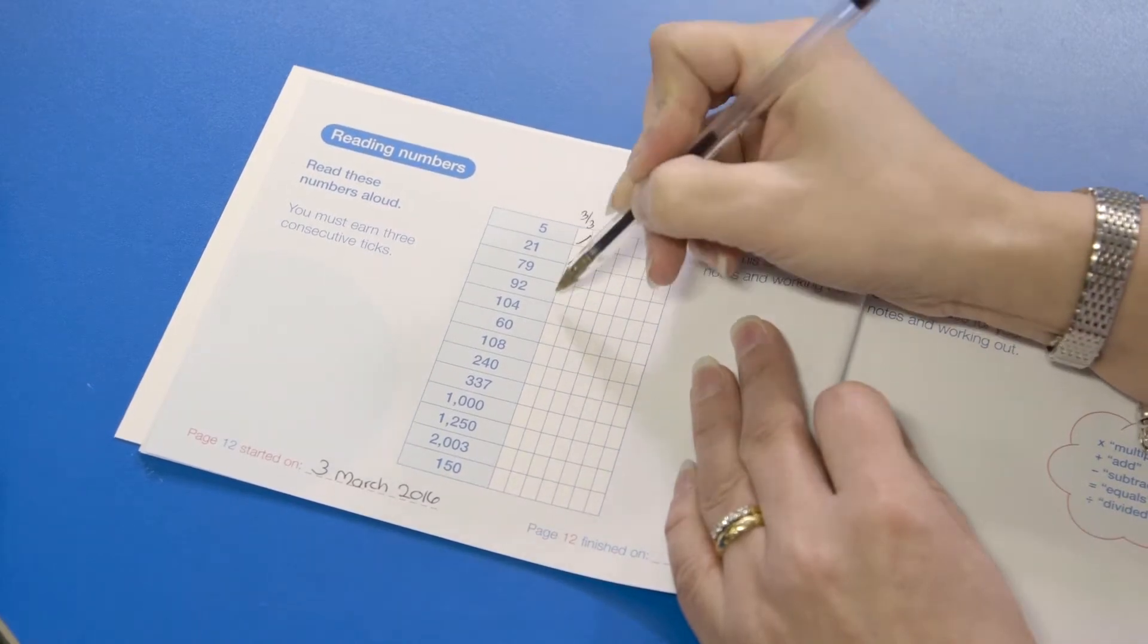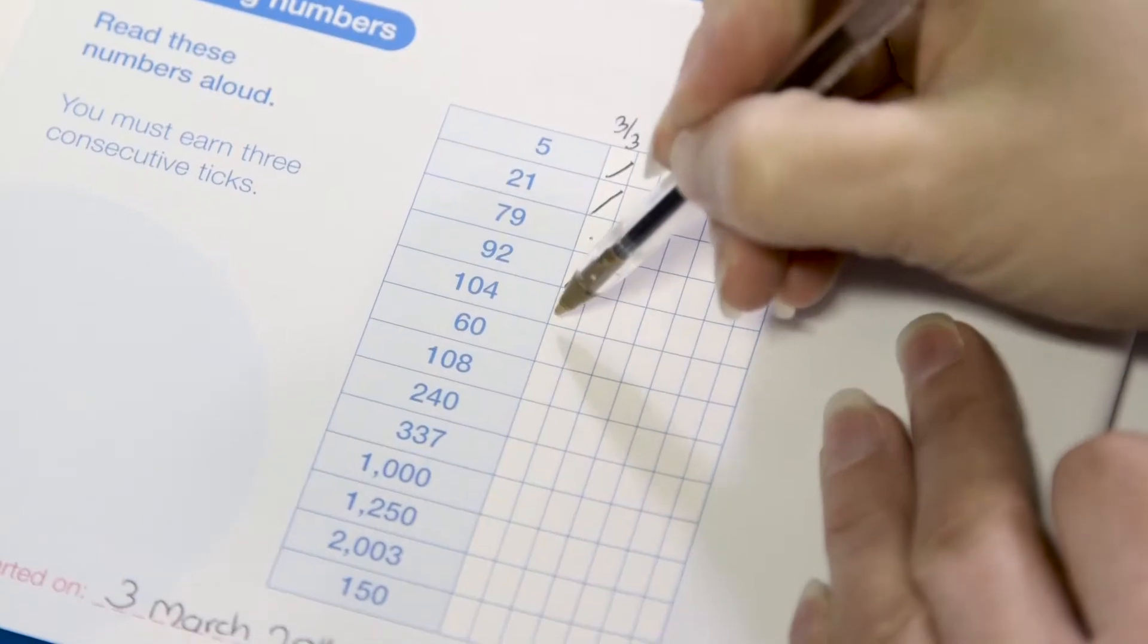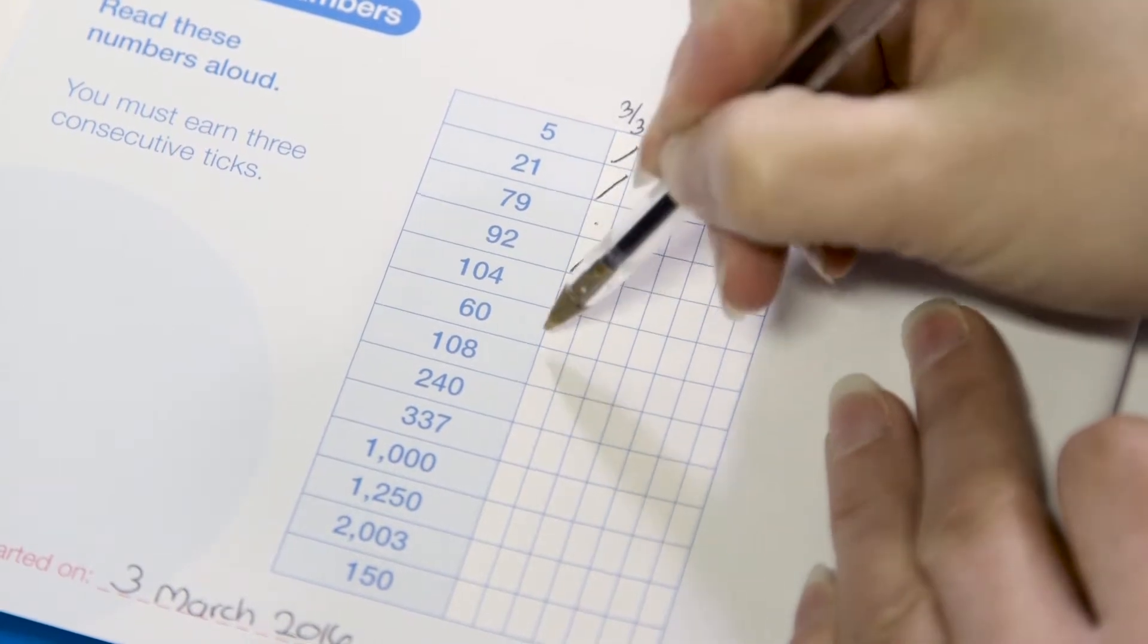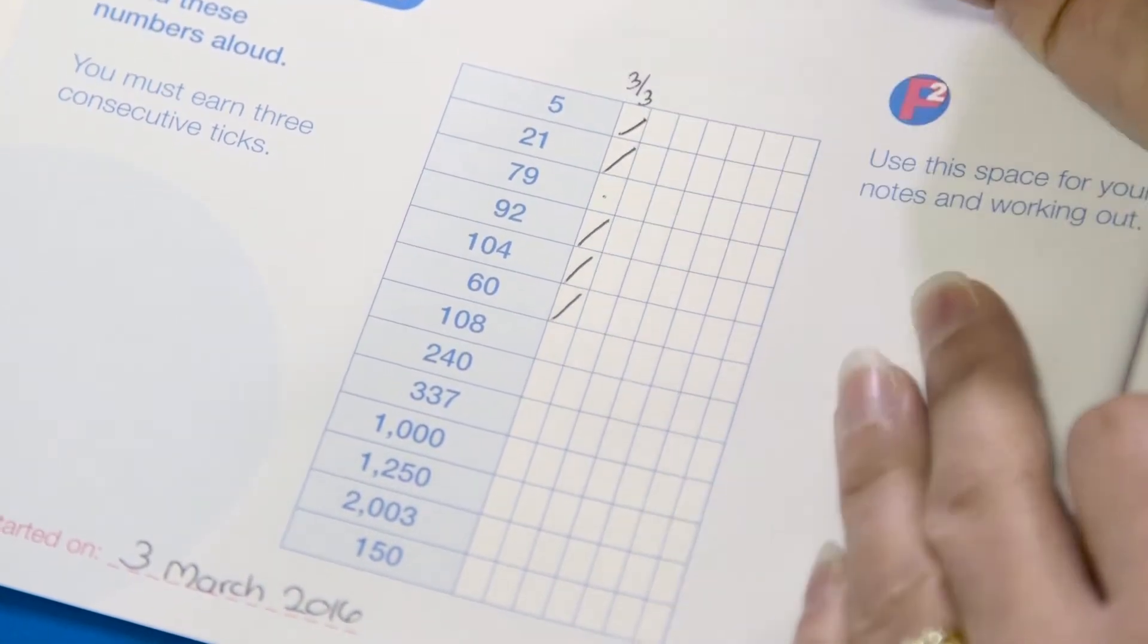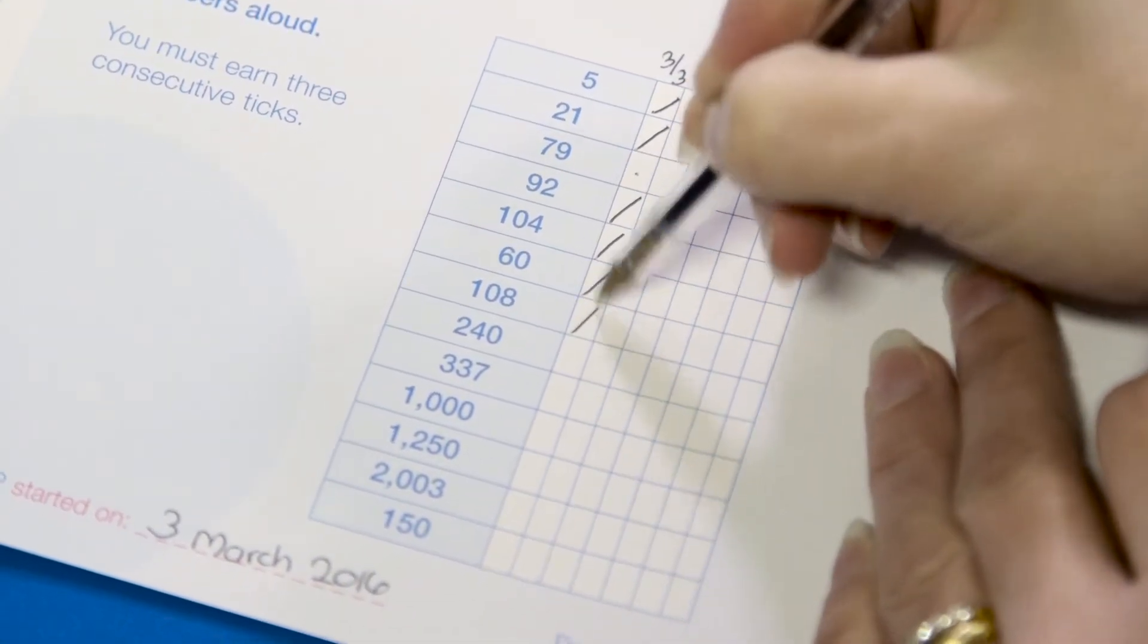Try to accept the first answer that's given. This will encourage students to think before answering and to find a suitable method to use. Of course you can use your discretion when wrong answers are self-corrected.